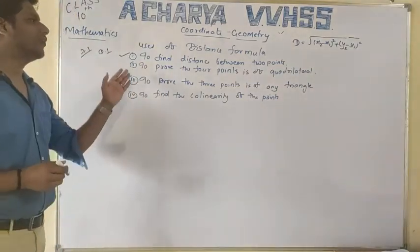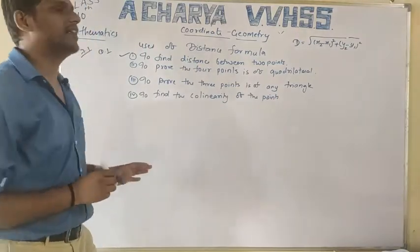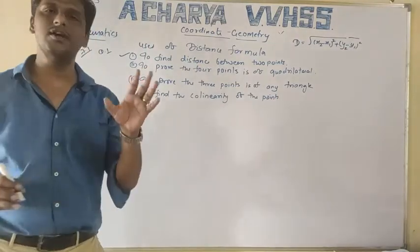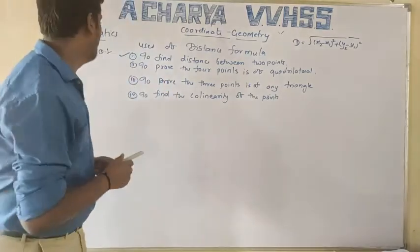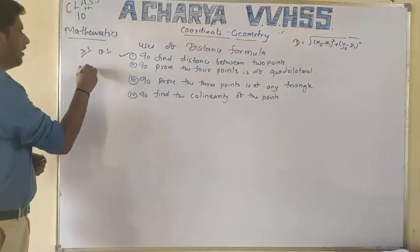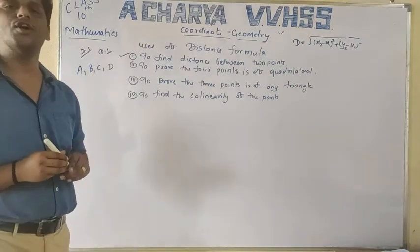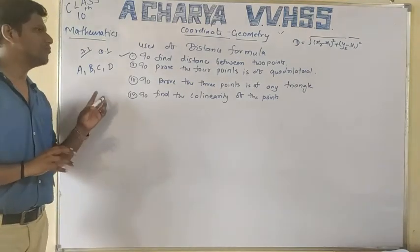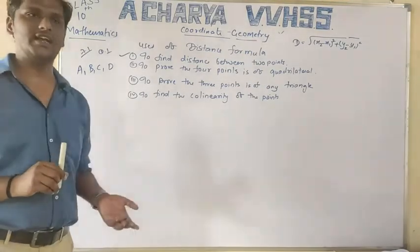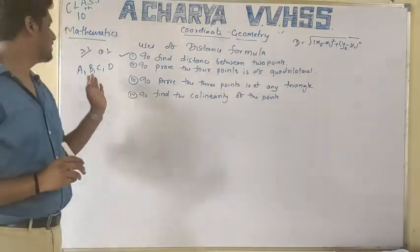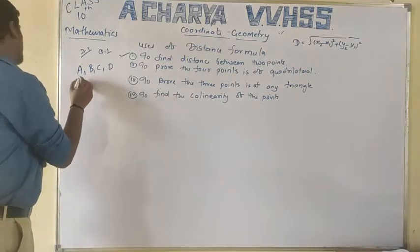The second use is to prove that four points form a quadrilateral. We can use the distance formula to find the distance between points A and B, and other pairs, to determine the type of quadrilateral.